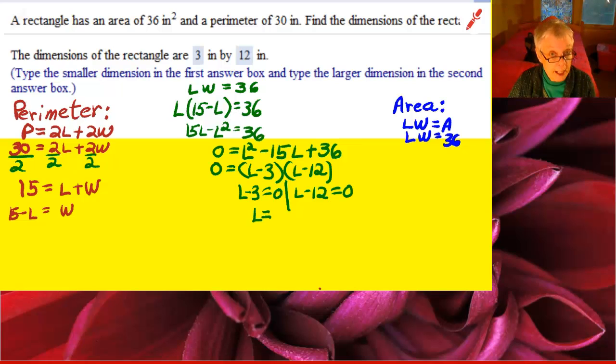Therefore, L equals 3 and L equals 12. Two possibilities. We have to find out what the width is for each possibility.